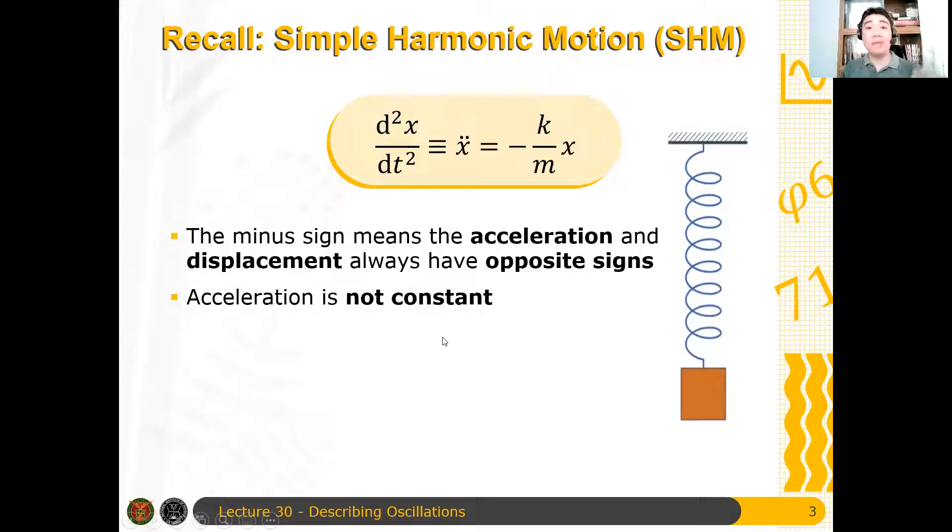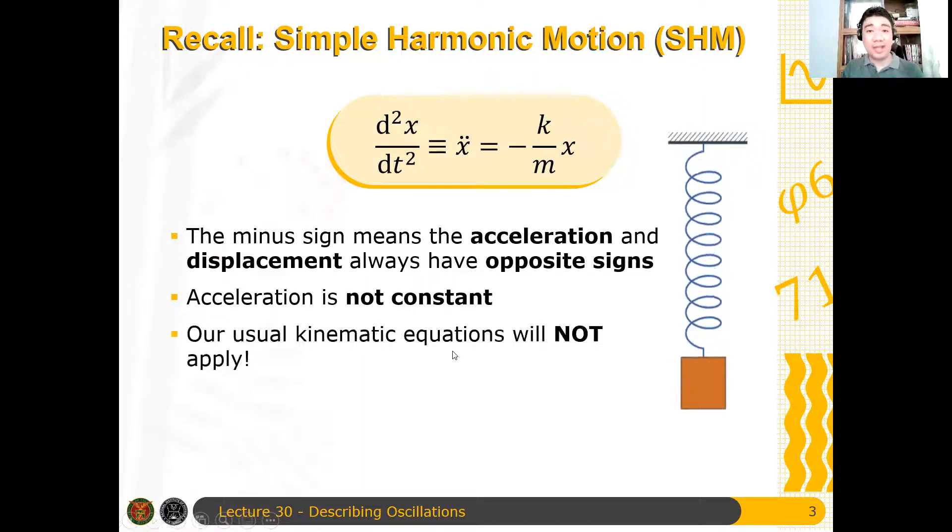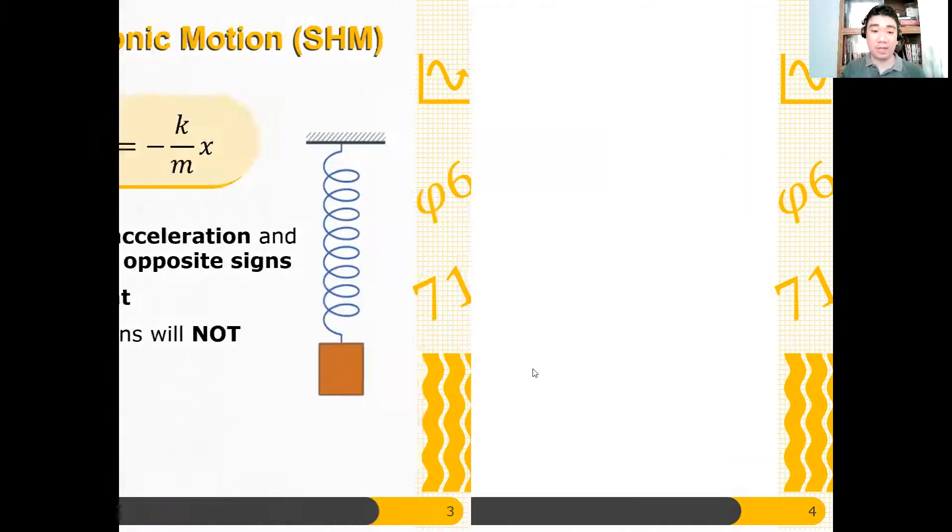Hence, in the previous lecture, we have obtained expressions for the position, velocity, and acceleration as a function of time. We used uniform circular motion to obtain these expressions. So it turns out that the angular frequency is related to the spring constant k and the mass m. Omega equals square root of k over m.